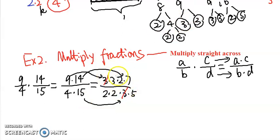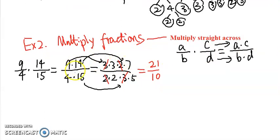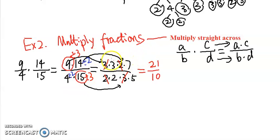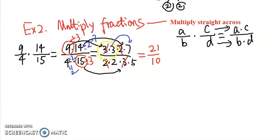Now we cross out the common factors: the 3 on top cancels with the 3 on the bottom, and the 2 on top cancels with a 2 on the bottom. Then we multiply the remaining top and bottom numbers to get the simplified answer. Alternatively, if you can see without breaking into primes — for example 9 and 15 both have 3 in common, so divide both by 3 to get 3 and 5; and 14 and 4 both have 2 in common, giving 7 and 2 — then multiply 3 times 7 on top and 2 times 5 on the bottom. But if you have trouble seeing what they have in common, you can always break them down.